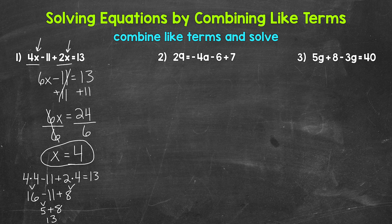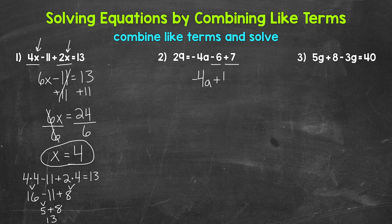Moving on to number two, where we have 29 equals negative four a minus six plus seven. Do we have any like terms we can combine? Yes — negative six and positive seven are both constant terms. Combining them: negative six plus seven gives us positive one. So the right side becomes negative four a plus one, and the equation is 29 equals negative four a plus one. We've simplified the right side and now have a two-step equation to solve.